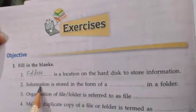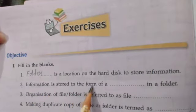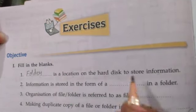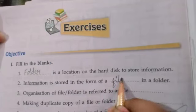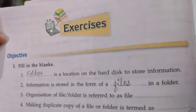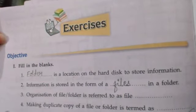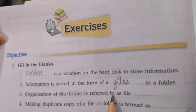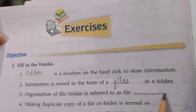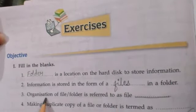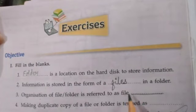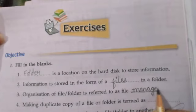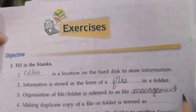Second: information is stored in the form of a dash in a folder. As I have told you, information is stored in the form of files in a folder. Third: organization of a file or folder is referred to as file dash. When we organize a file or folder in a systematic way, that is referred to as file management. Write down: management.